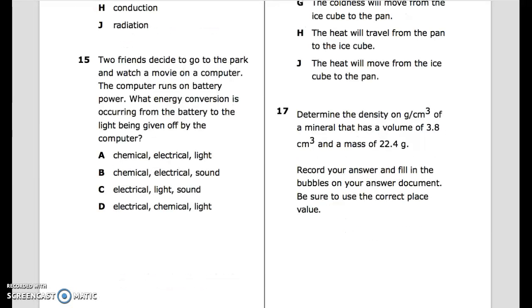Number 15: Two friends decide to go to the park and watch a movie on a computer. The computer runs on battery power. What energy conversion is occurring from the battery to the light being given off by the computer? A. Chemical, Electrical, Light. B. Chemical, Electrical, Sound. C. Electrical, Light, Sound. D. Electrical, Chemical, Light.